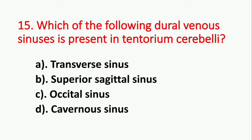Question number 15. Which of the following dural venous sinuses is present in tentorium cerebelli? Option A: Transverse sinus. Option B: Superior sagittal sinus. Option C: Occipital sinus. Option D: Cavernous sinus. The answer is Option A, Transverse sinus.